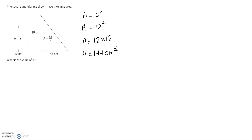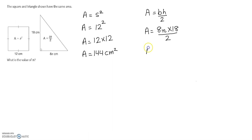Then we're going to find the area of the triangle. The area of a triangle is base times height divided by 2. The base is given as 8n and the height is given as 18. When I multiply 8 with 18, I get 144n, then divide by 2, giving me 72n centimeters squared.